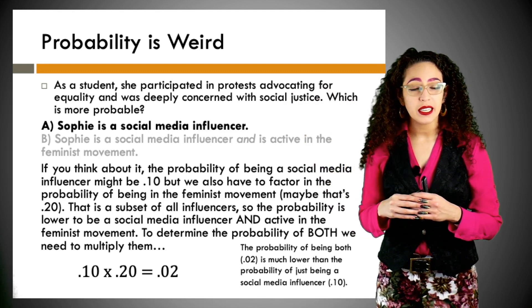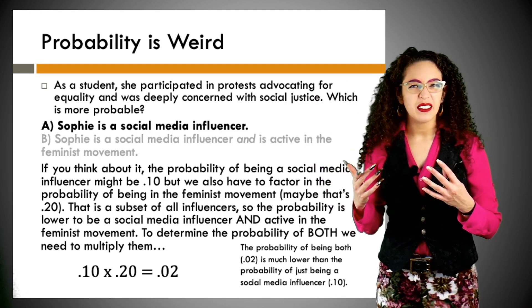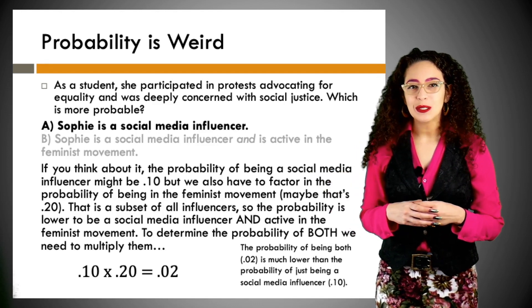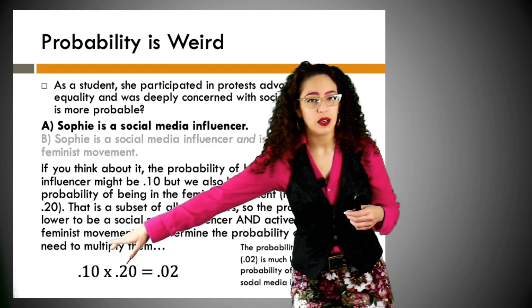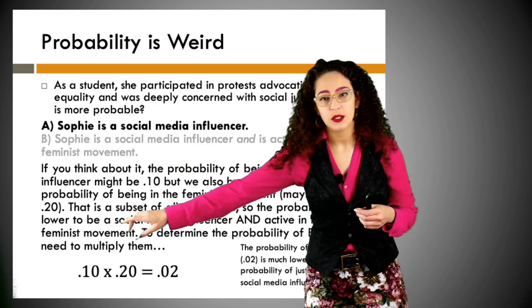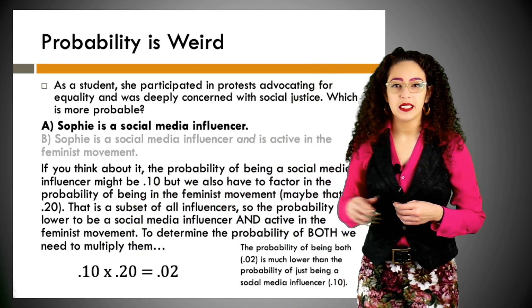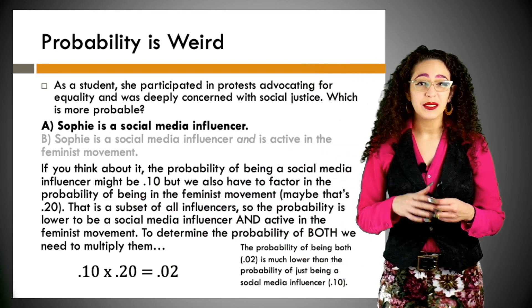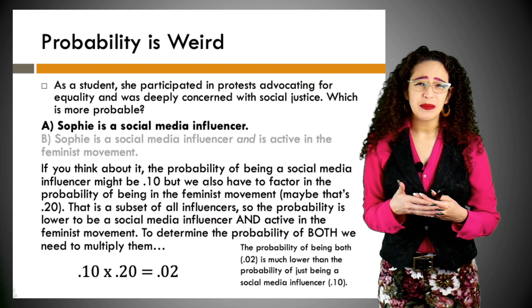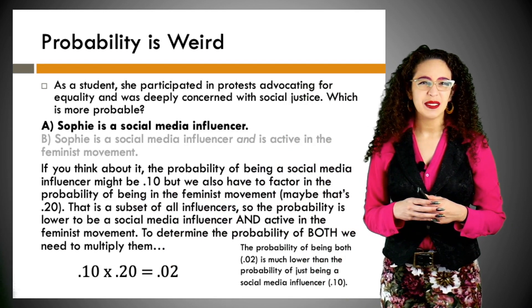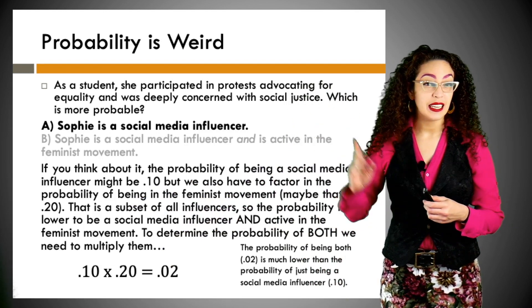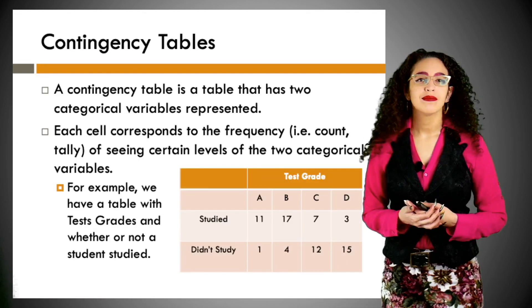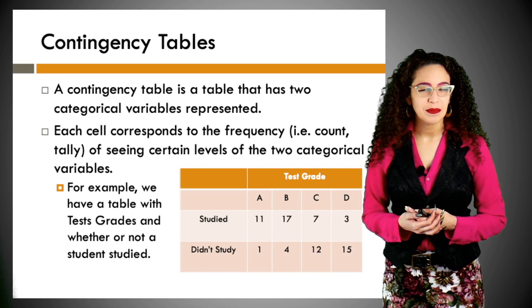When doing probabilities you don't just add the two together — like 0.1 and 0.2 to get 0.3. You have to actually multiply them. So here we take 0.1 (the chance of being a social media influencer) times 0.2 (the chance of being a feminist) and we get 0.02 — only a two percent chance. Probability can be a little weird; it's not always intuitive, and our logic can be flawed.